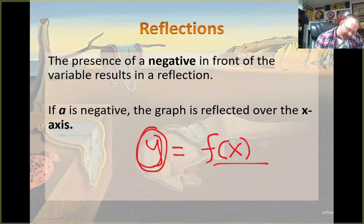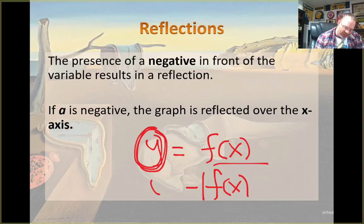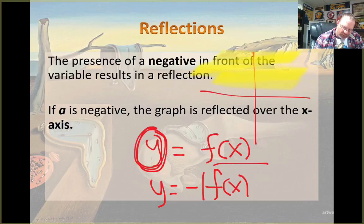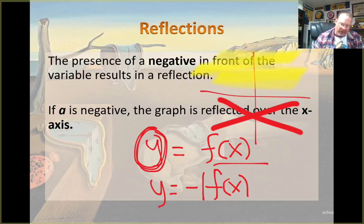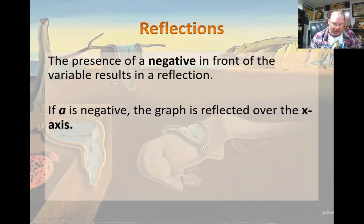So if you just put a negative 1 in front of f of x, it takes all your y's from being up here. It makes them now negative. It flips it across the x-axis, so now it's down there. So that's why we have these reflections. That's why they occur.